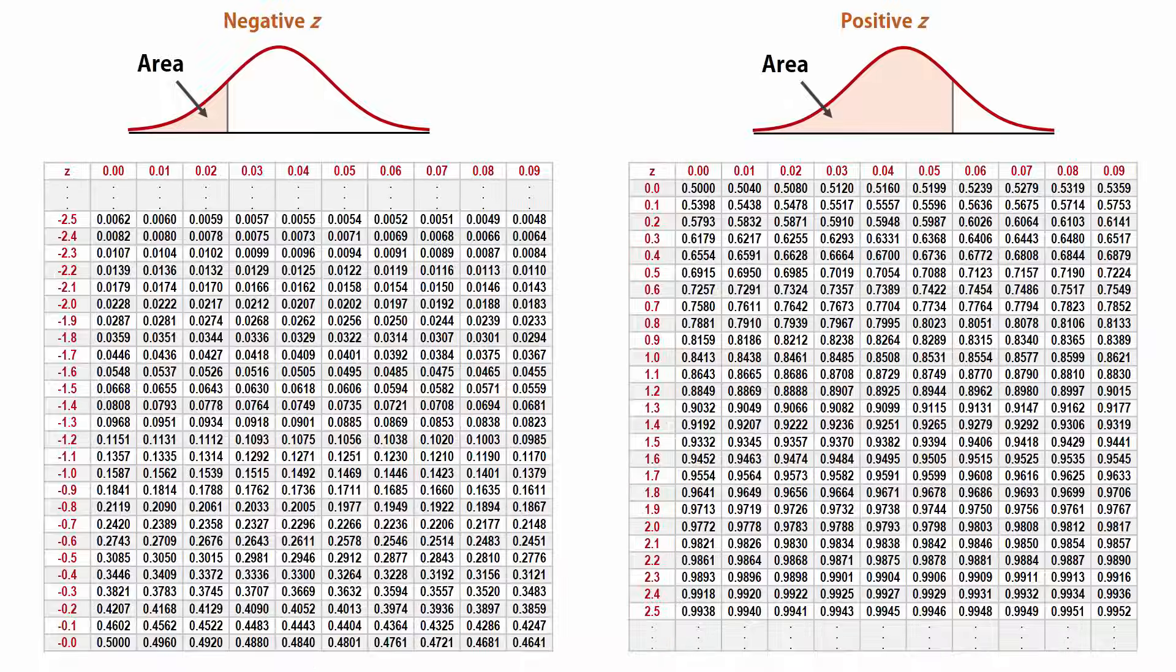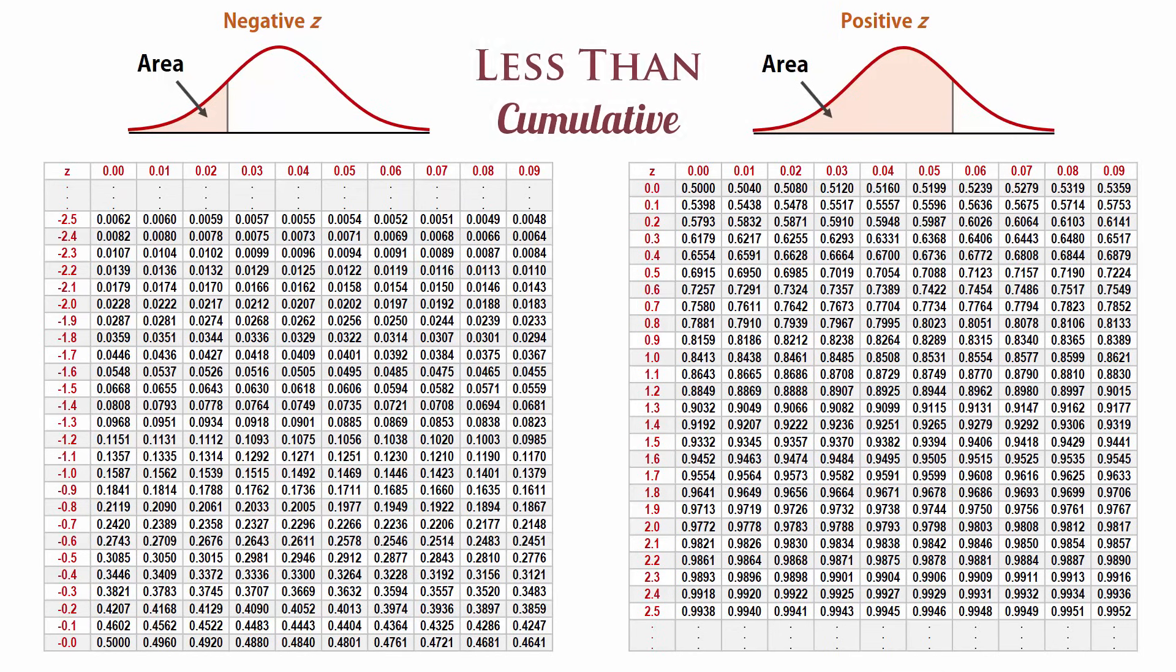The standard normal tables we will be using are the less than cumulative tables. They usually have the left tail of the distribution shaded and also have positive and negative parts.